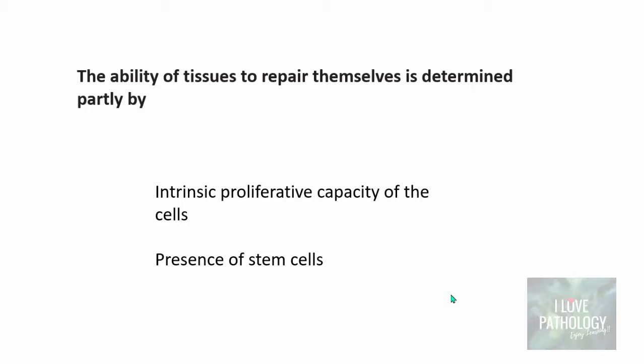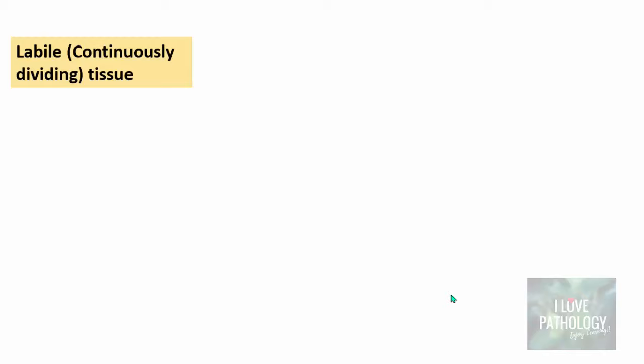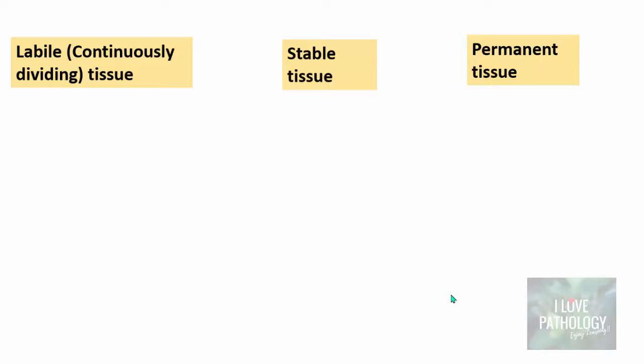Remember these two things: the proliferative capacity of the cells and the presence of stem cells are important for understanding tissue repair. Based on the proliferative capacity of cells, tissues in the body are subdivided into three types: one, labile tissue — the continuously dividing tissue; two, stable tissue; and three, permanent tissue.